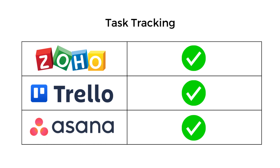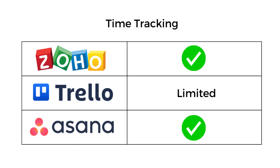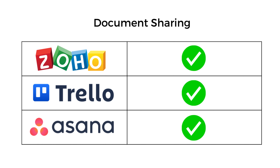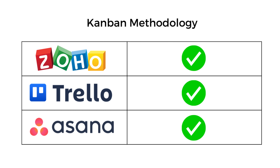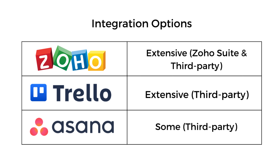Now let's look closely at a feature comparison of Zoho Projects, Trello, and Asana to help you make a more informed decision. All three apps offer excellent task tracking. For time tracking, Trello has limited capabilities. For document sharing, all three are equal. In reporting and analytics, Zoho offers the most comprehensive set, with extensive analytics, while Trello and Asana offer only basic analytics. All three apps support the Kanban methodology.